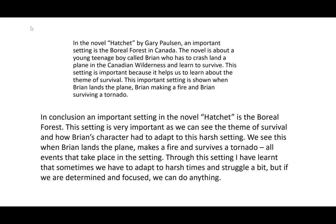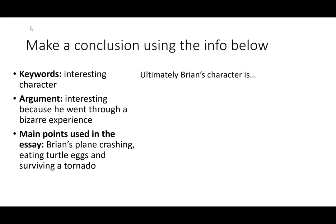Now try to piece this together and do it yourself. Using the information provided, try to formulate a conclusion. Even if you haven't read the story, you should have a slight indication of what it's about. If we're looking at an interesting character, the argument is that Brian's character is interesting because he went through a bizarre experience — meaning crazy or different. The main points were that he had to crash a plane, eat turtle eggs, and survive a tornado. Think about why that makes the character interesting and what you could learn from that.